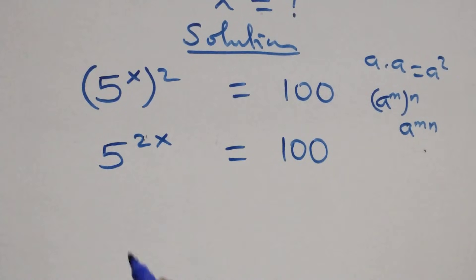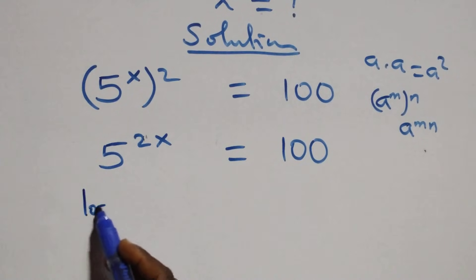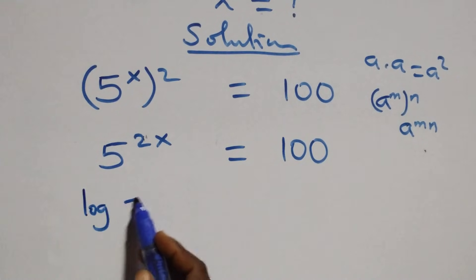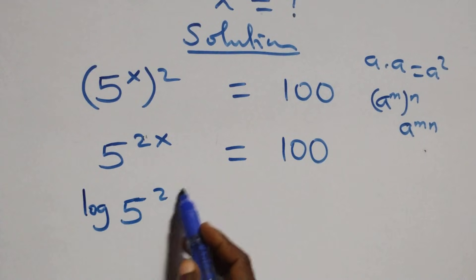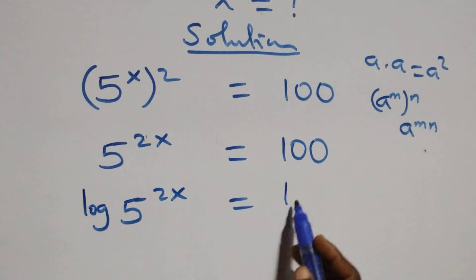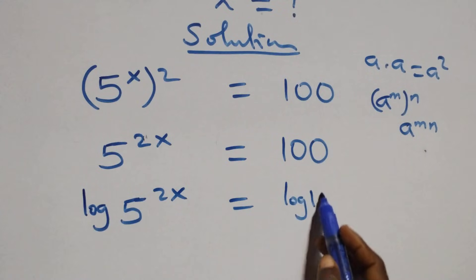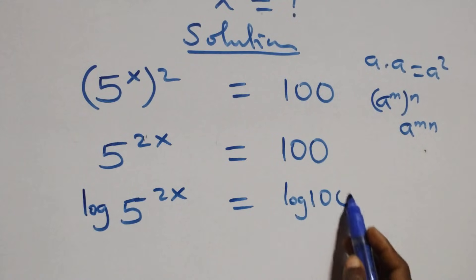The next step: take the log on both sides. We have log of 5 raised to power 2x, equals to log 100.